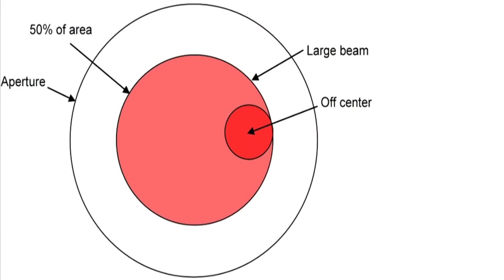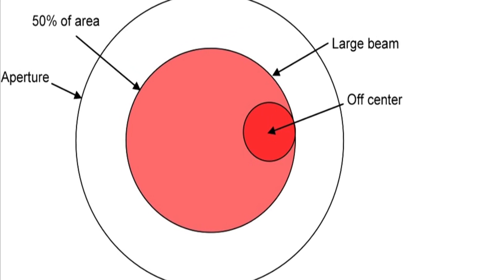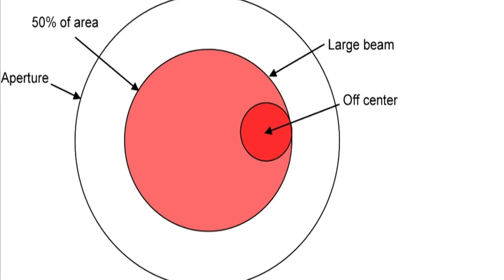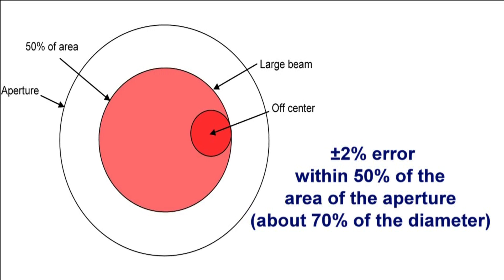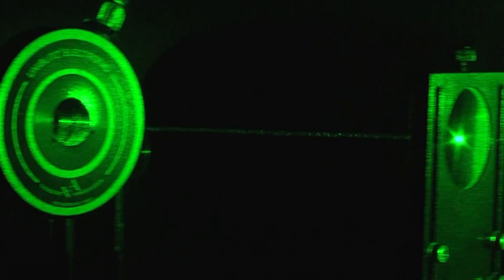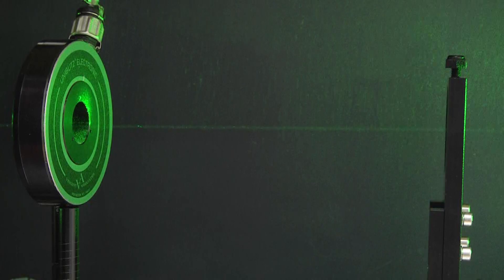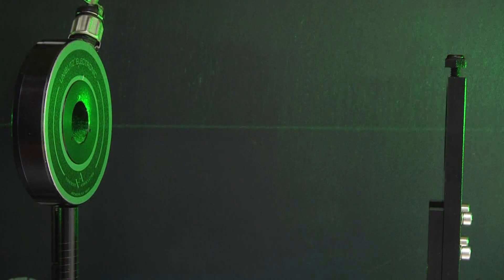Now we define usually, as you can see in this graph, that the maximum error for a beam that is off center is plus or minus two percent error within 50 percent of the area of the aperture or 70 percent of the diameter. If you carefully center the beam on your power meter, then you can usually ignore this source of error.